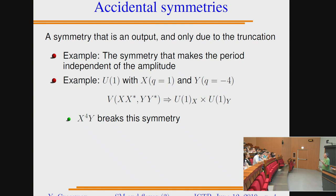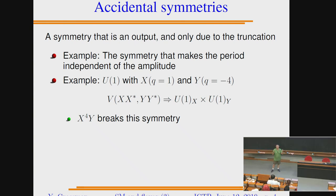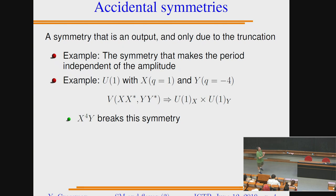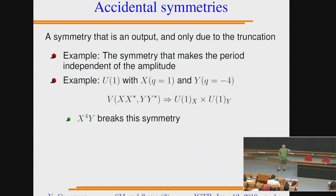The way we think about model building: we tell what the symmetry is and impose it. Everything is allowed unless it's forbidden by a symmetry — one that you choose to impose. When you impose a symmetry, the Lagrangian must be invariant under it. Then there's a different kind: accidental symmetry, which is an output of your theory. You write your Lagrangian and find it has a bigger symmetry than what you imposed — because you truncated your expansion. If you keep adding more terms, you cannot get extra symmetry.